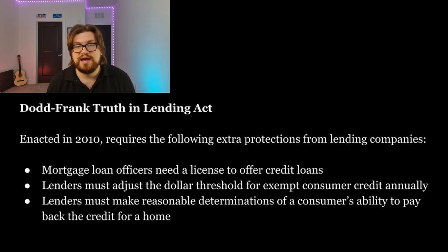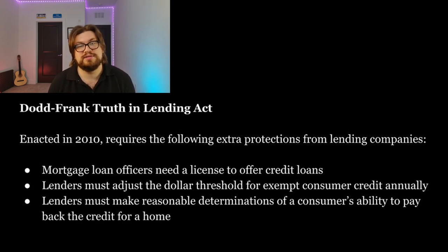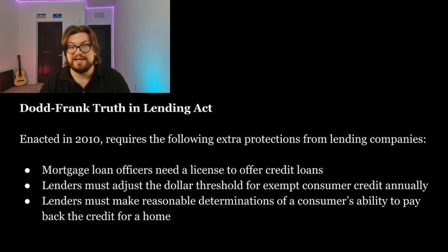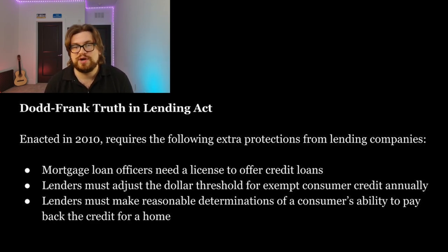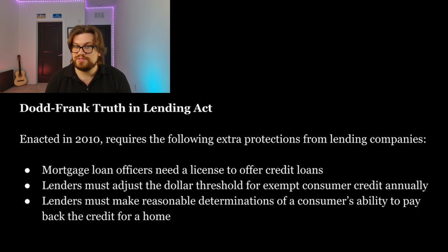Another notable amendment is the Dodd-Frank Truth in Lending Act, enacted in 2010. It requires the following extra protections from lending companies: one, mortgage loan officers need a license to offer credit loans; two, lenders must adjust the dollar threshold for exempt consumer credit annually; and three, lenders must make reasonable determinations of a consumer's ability to pay back the credit for a home. That last requirement means creditors cannot give out loans to borrowers who cannot repay them. Credit checks are now required to determine a borrower's ability to repay, but this was not always the case before acts like the Dodd-Frank Truth in Lending Act were enacted.